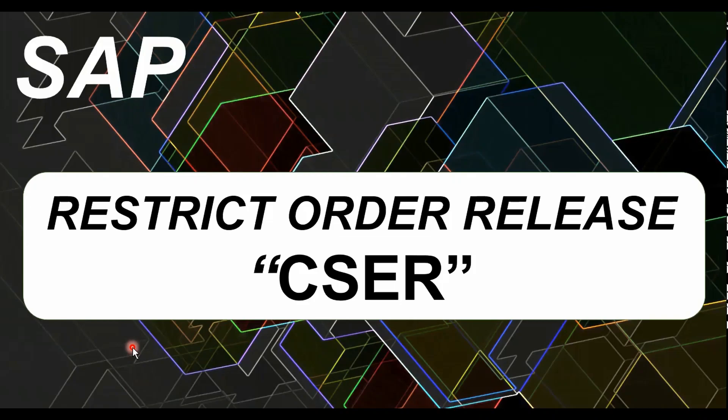Hey guys, welcome back to my channel SAP with IK. Hope you're all doing good. Today in this video we will be discussing how to restrict the release of a production order or a process order if there is a status CSCR, which means there is an error in the cost calculation. So let's get started.